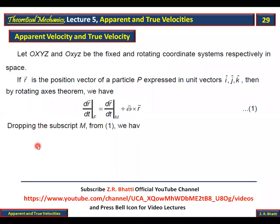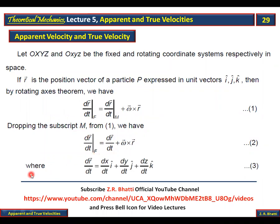Dropping the subscript M from the formula, we have DR/DT (fixed) is equal to DR/DT plus omega cross R, where DR/DT is the derivative in the moving coordinate system — the rotating coordinate system in which the unit vectors I, J, K are constants. This is the simple derivative, giving us the velocity.